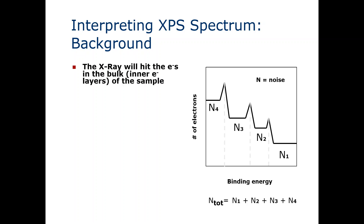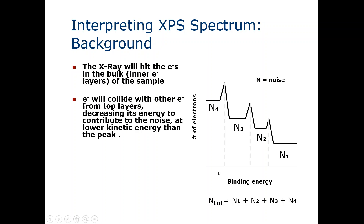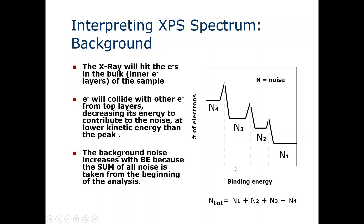During XPS analysis, the key thing is the X-ray. The X-ray hits the electrons in the bulk of the sample. We have an X-ray source which generates X-rays that hit our bulk sample — meaning the inner layers of the sample. As a result, electrons collide with other electrons from the top layers, decreasing their kinetic energy, contributing noise at a lower kinetic energy than the peak.